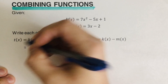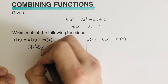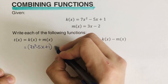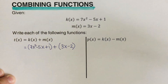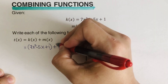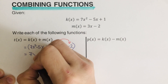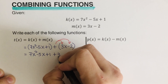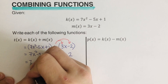k of x is equal to 7x squared minus 5x plus 1. Then we add m of x, which is 3x minus 2. We distribute the positive to each term inside the parentheses, and this comes out to be 7x squared minus 5x plus 1 plus 3x minus 2.